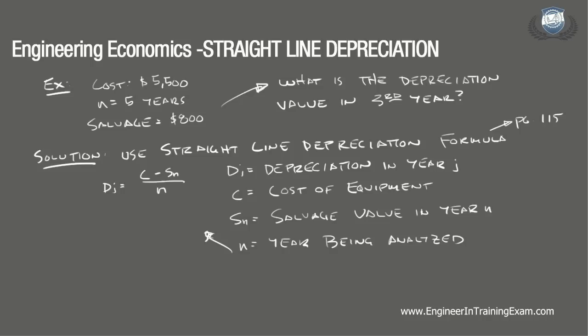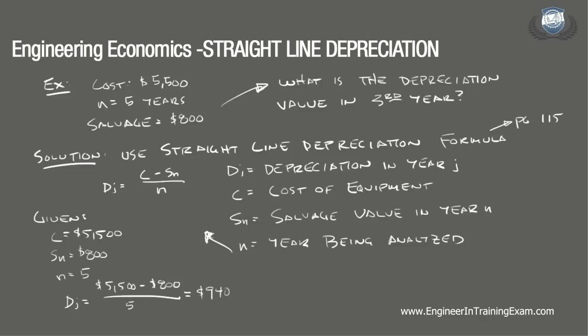In this problem, we are given C — our cost is $5,500. We're given a salvage value S sub N of $800, and we're given N, a period of 5 years. Plugging these values into the equation, we find that D sub J is equal to $5,500 minus $800, divided by 5, which is equal to $940. The depreciation is uniform throughout its lifespan. Therefore, in the third year, the depreciation charge will be $940, as it would be in any other year.